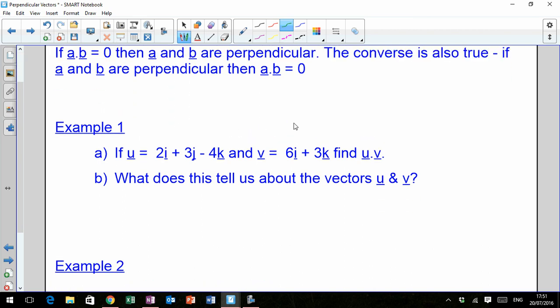If U is equal to that and V is equal to that, find U dot V. So U dot V is equal to 2 multiplied by 6 from your I's, plus 3 multiplied by 0 for your J's, and then plus negative 4 multiplied by 3 for your K's. So that's 12, that's 0, and that's negative 12, which is equal to 0. So there's my dot product.